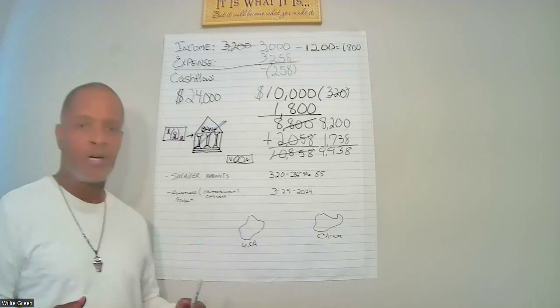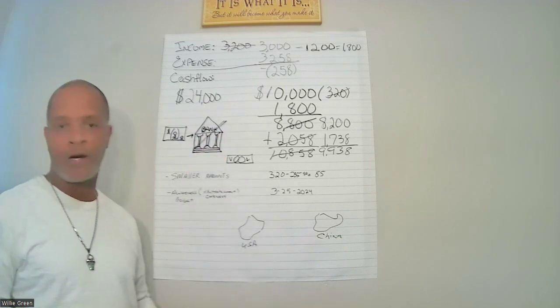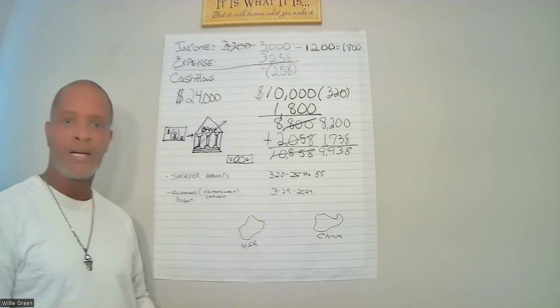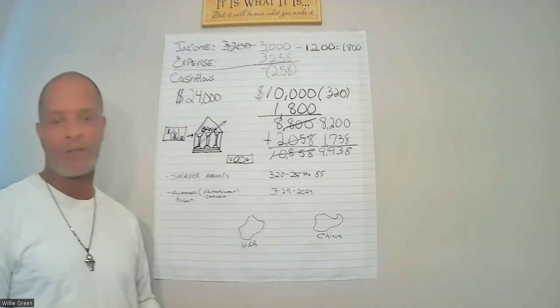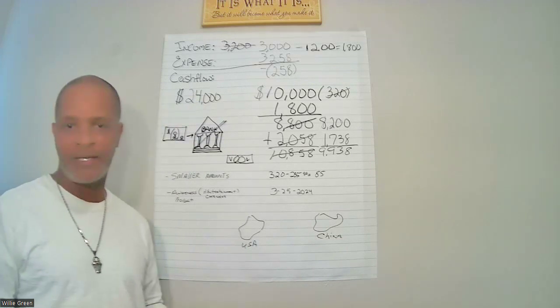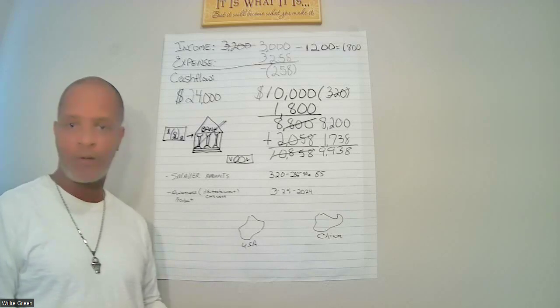We initially started with the idea of trying to tackle a credit card of $24,000. Over the last two months, the client hasn't really been seeing too much of a dent in the particular credit card using Velocity Banking. So we decided, okay, let's go for another credit card that's a smaller amount.